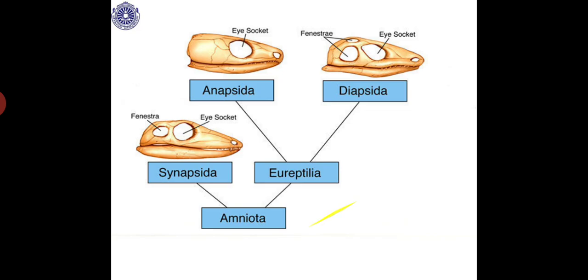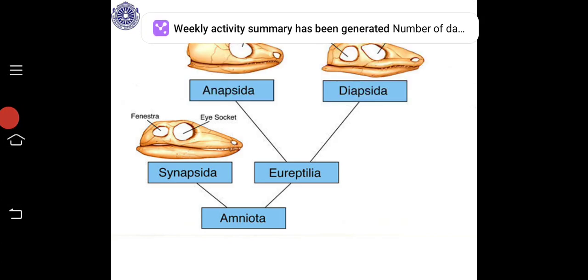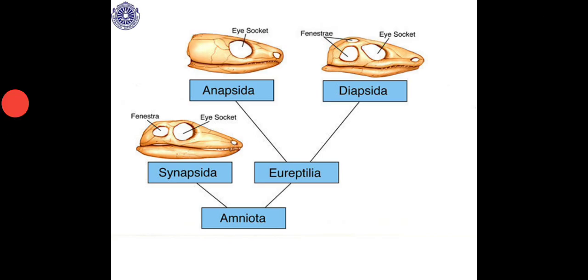At the base there are amniotes — animals which develop extra-embryonic membranes during early embryonic life. From those amniotes, reptiles like Synapsids and Eureptilia evolved. In the skull region of these vertebrates, there is an orbit where the eyes are located, and behind that orbit there is the fenestra, or fossa.